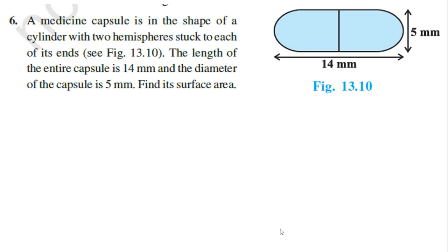You can see question number six here — a medicine capsule. You all are familiar with this kind of shape because it is almost a routine part of people's life. Have you ever considered the shape of this kind of medicine capsule? The question asks us to find the area of this capsule. The medicine capsule is in the shape of a cylinder with two hemispheres stuck to each end. This is the hemisphere on this side, and this is the hemisphere on the other side.